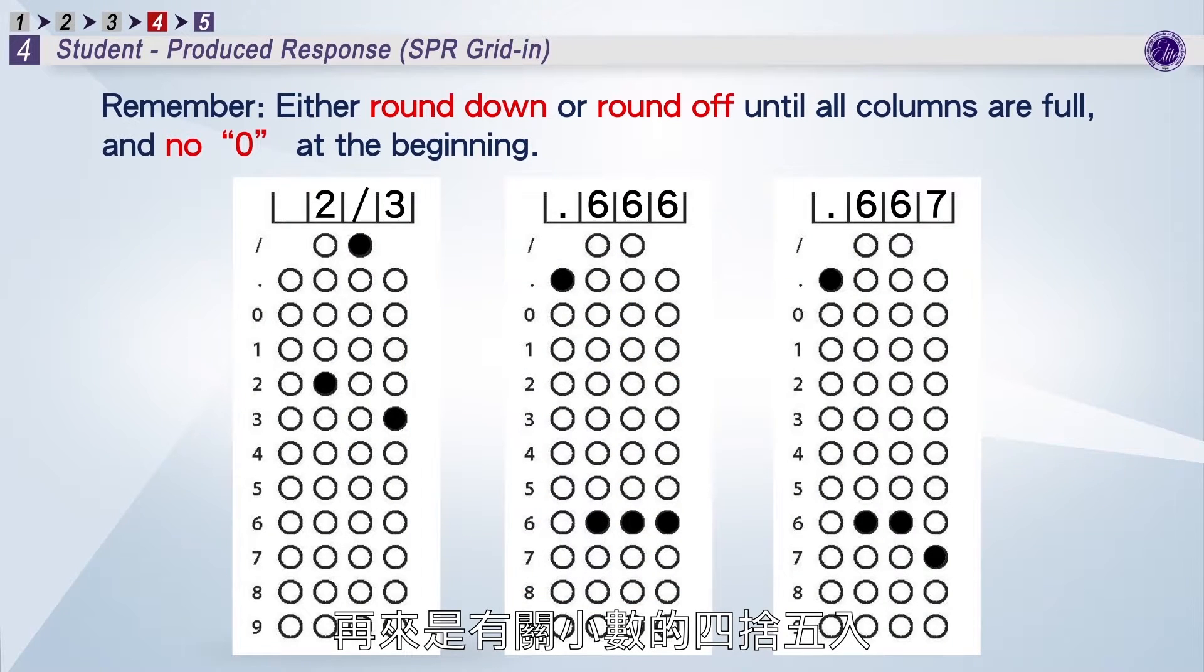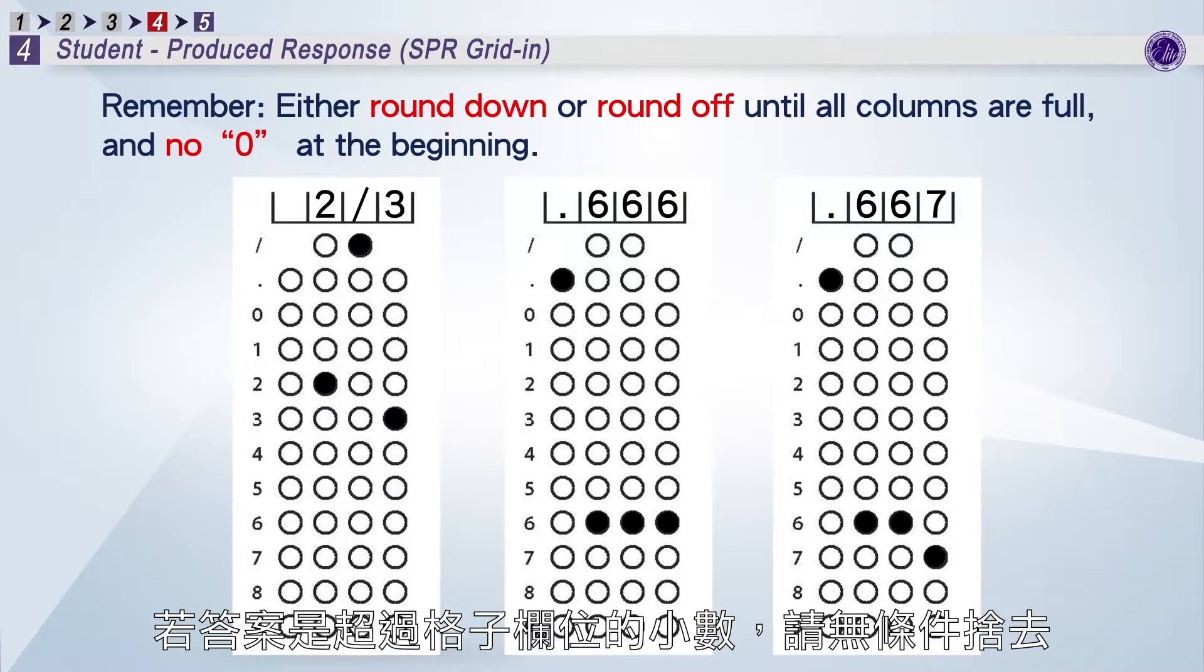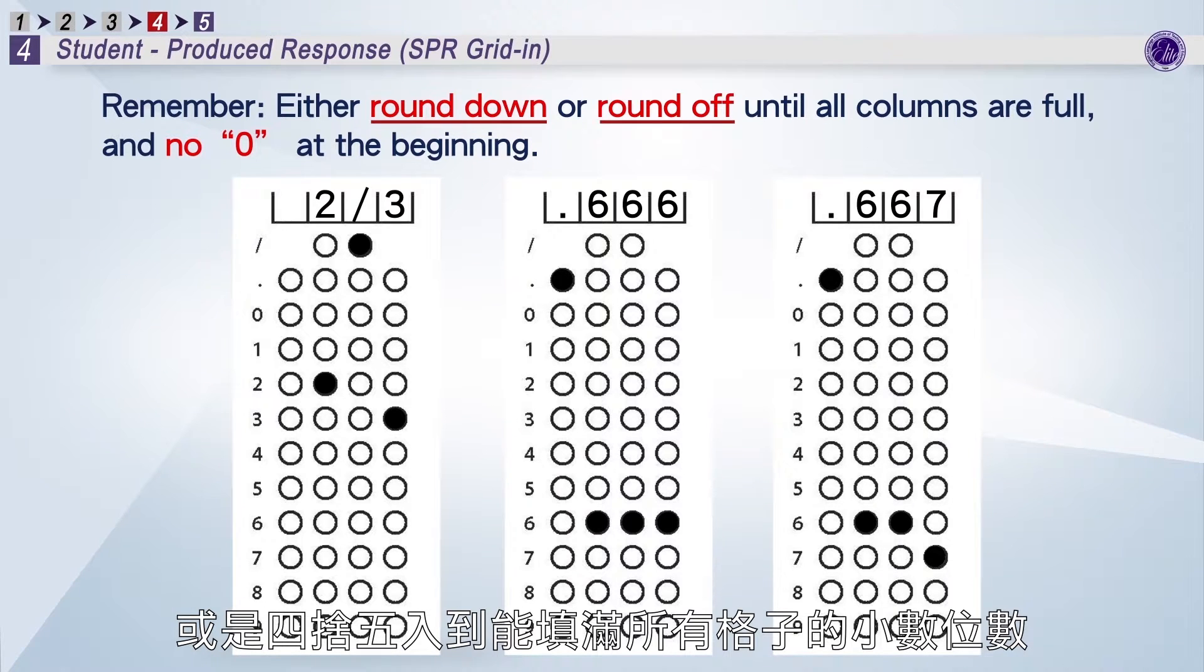Now, let's look at the rounding off of decimals. Please just round down or round off the decimals and fill all the grid ends when the decimals need more than 4 columns.